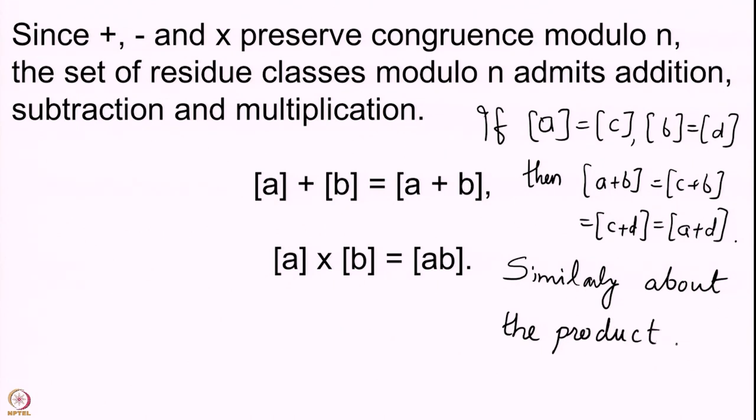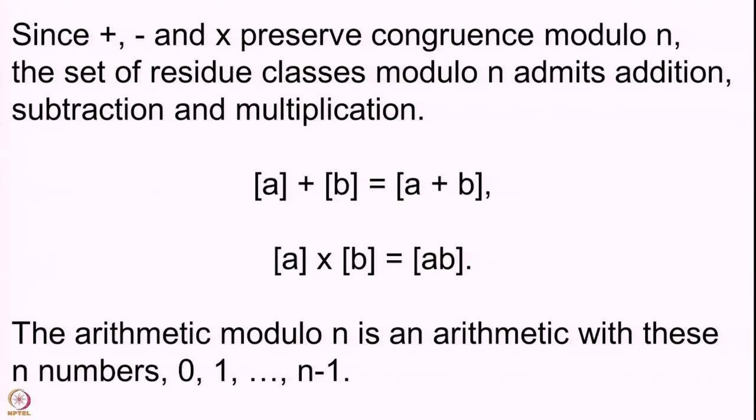I will not go over these again, but one final remark before we stop this lecture: the arithmetic modulo n is an arithmetic with these n numbers 0, 1, 2, ..., n−1. We add, subtract, or multiply them with respect to the congruence relation modulo n. That is what we will be doing in this part of the course on congruence, and we will explore this further. I hope to see you again in the next lecture. Thank you.